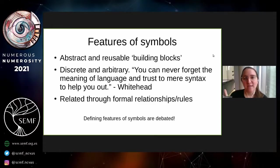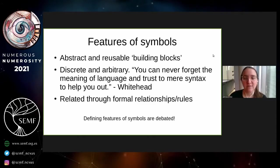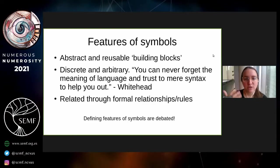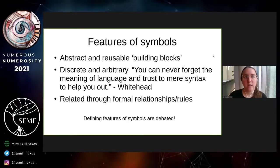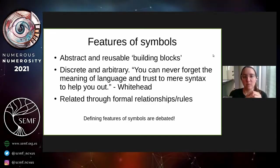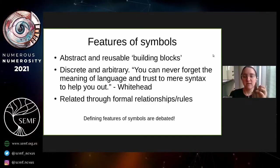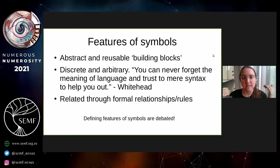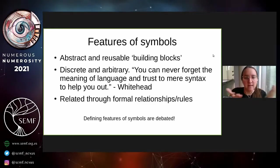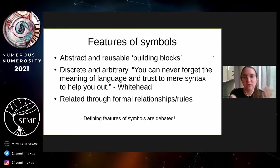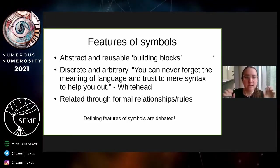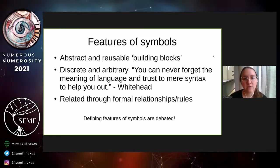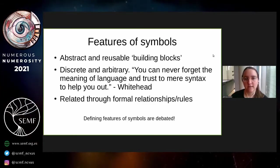Symbols have been described as abstract and reusable building blocks — the idea that you have smaller components that combine into larger things. There's also the notion that they're discrete and arbitrary: the symbol is its own thing and relates to something in the world, but that relationship is not derivable from the symbol itself. The word 'milk' and the word 'leche' both relate to the same object in the world, but you can't look at the letters in either word and understand that.